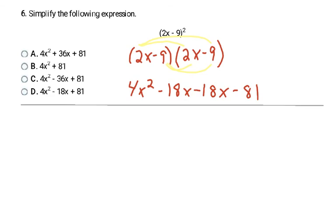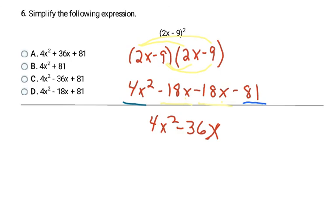I have 4x squared as my first term — there are no other x squareds, so I just rewrite it. My next term is negative 18x, and negative 18x combines with the other negative 18x, because they both have single x's. Negative 18x minus 18x is negative 36x. If you have trouble with negative number rules, you can always use a calculator to double-check — there's nothing wrong with that. My last term is minus 81, and it has nothing to combine with. So my final answer is 4x squared minus 36x minus 81, which is letter C.